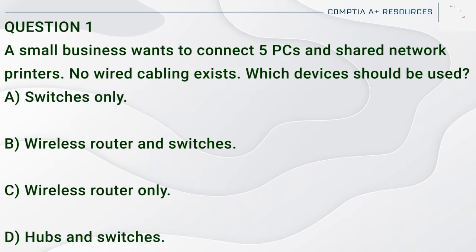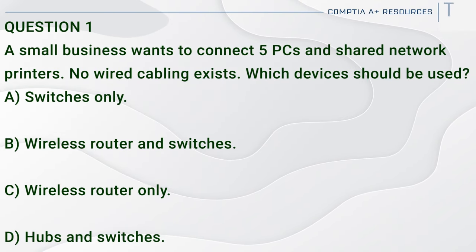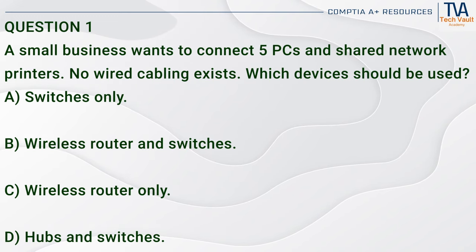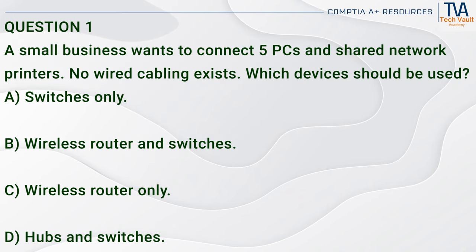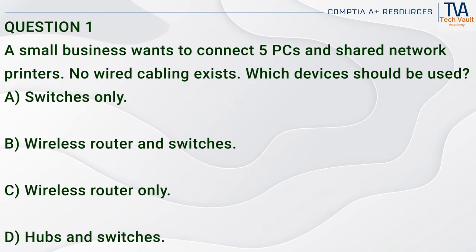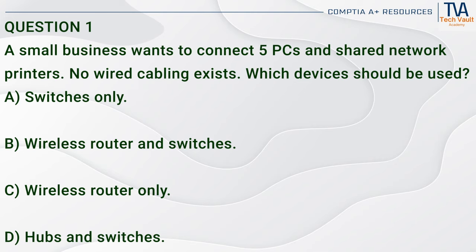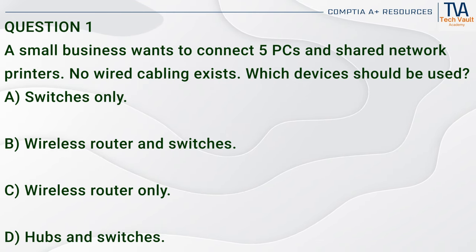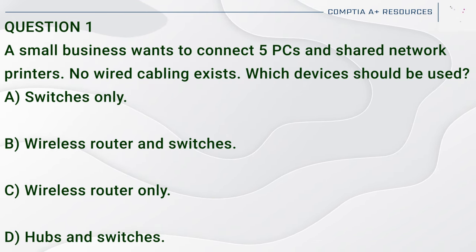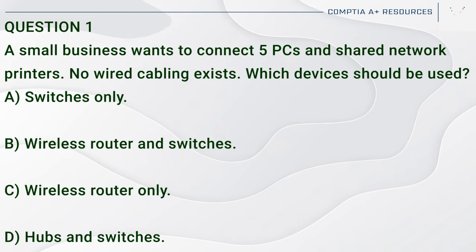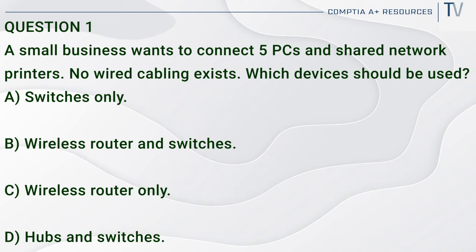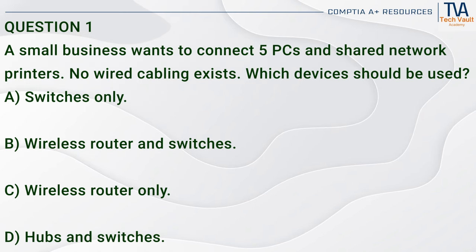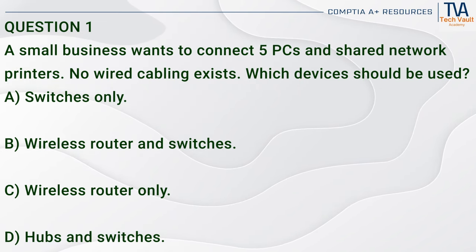Question 1. A small business wants to connect 5 PCs and a shared network printer. No wired cabling exists. Which devices should be used? A. Switches only. B. Wireless router and switches. C. Wireless router only. D. Hubs and switches.